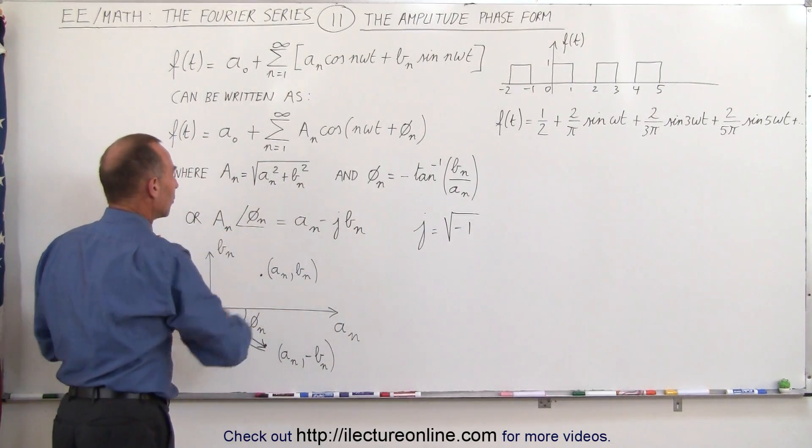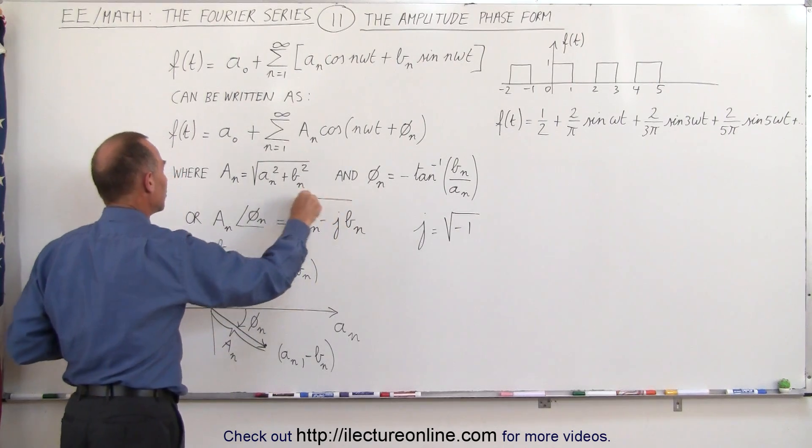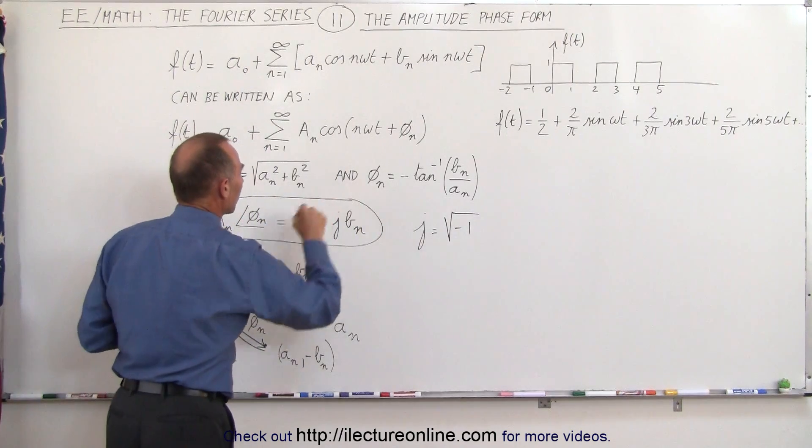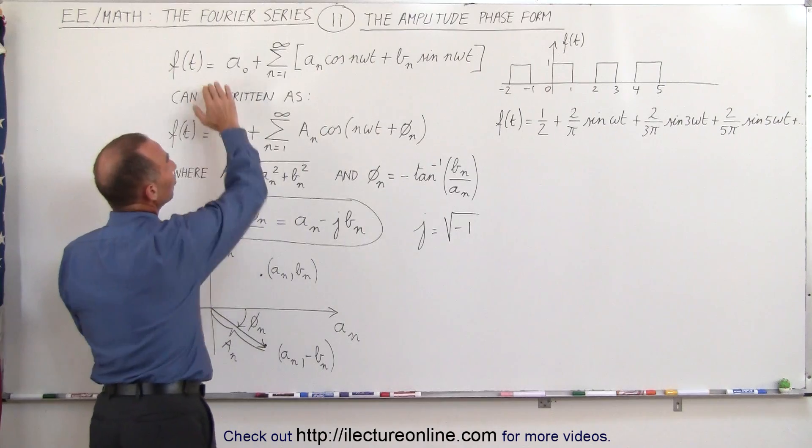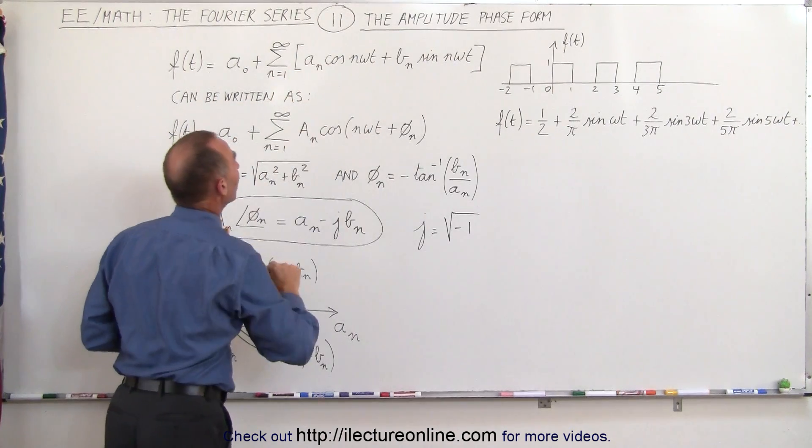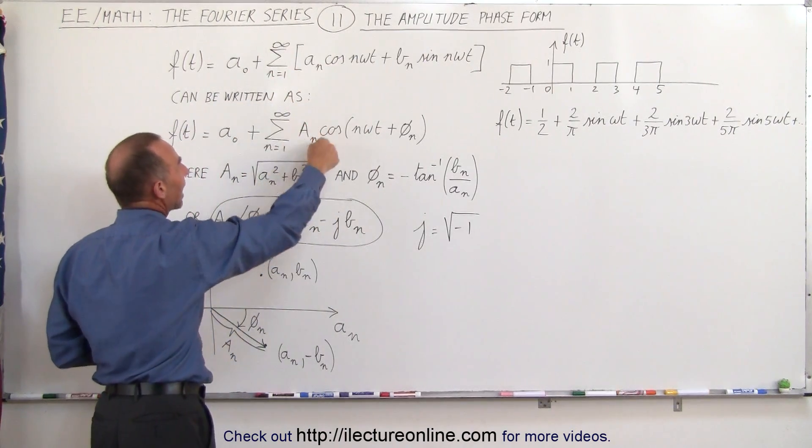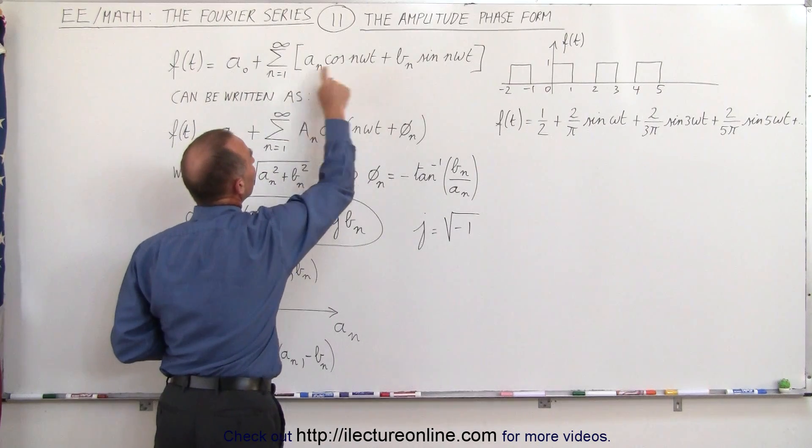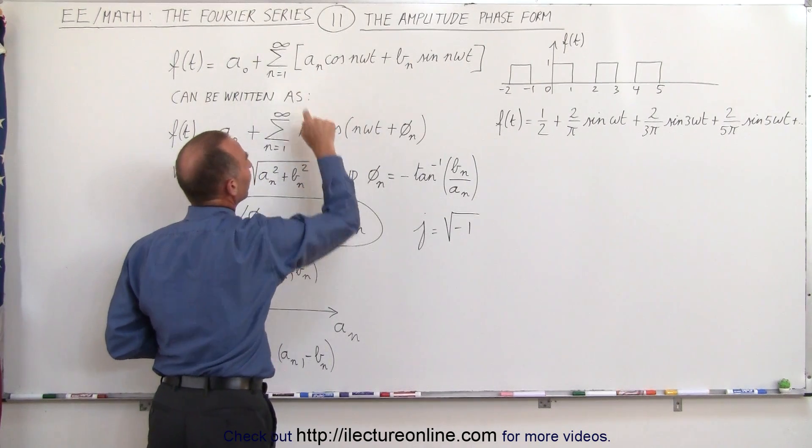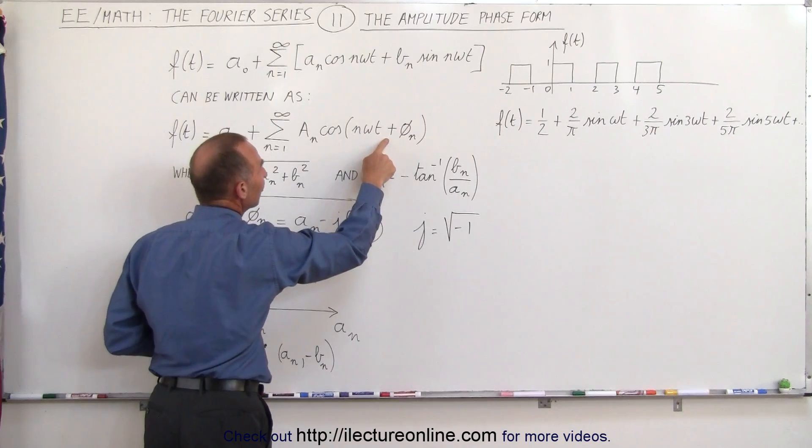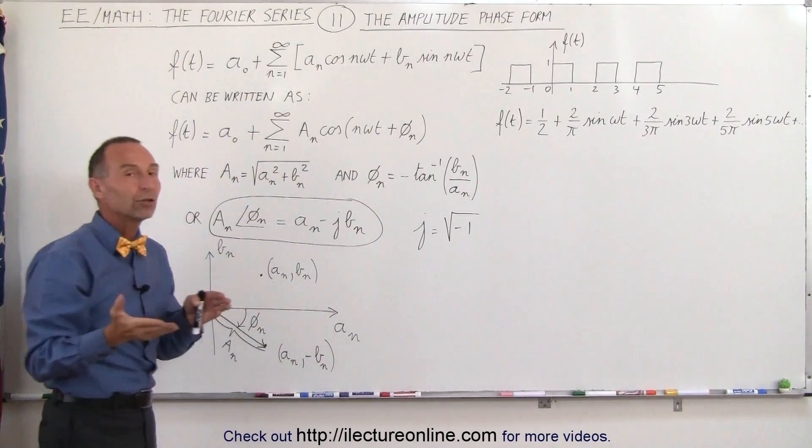So instead of writing it in our traditional sense right here with cosines and sines with a sub-n and b sub-n, we can simply write it as the amplitude derived from the two using Pythagorean theorem, and then the phase difference depending upon the magnitude or the amplitude of a and the amplitude of b, we get a relative phase angle out of that.